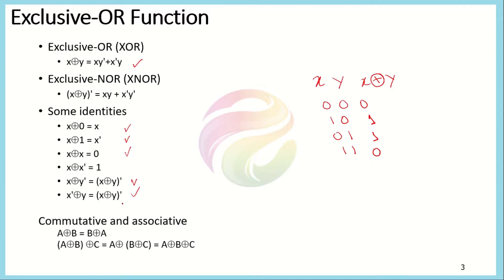There are other properties related to exclusive OR. First, exclusive OR is commutative — it means that if you change the position of variables, it does not affect the output. So A exclusive OR B is the same as B exclusive OR A.